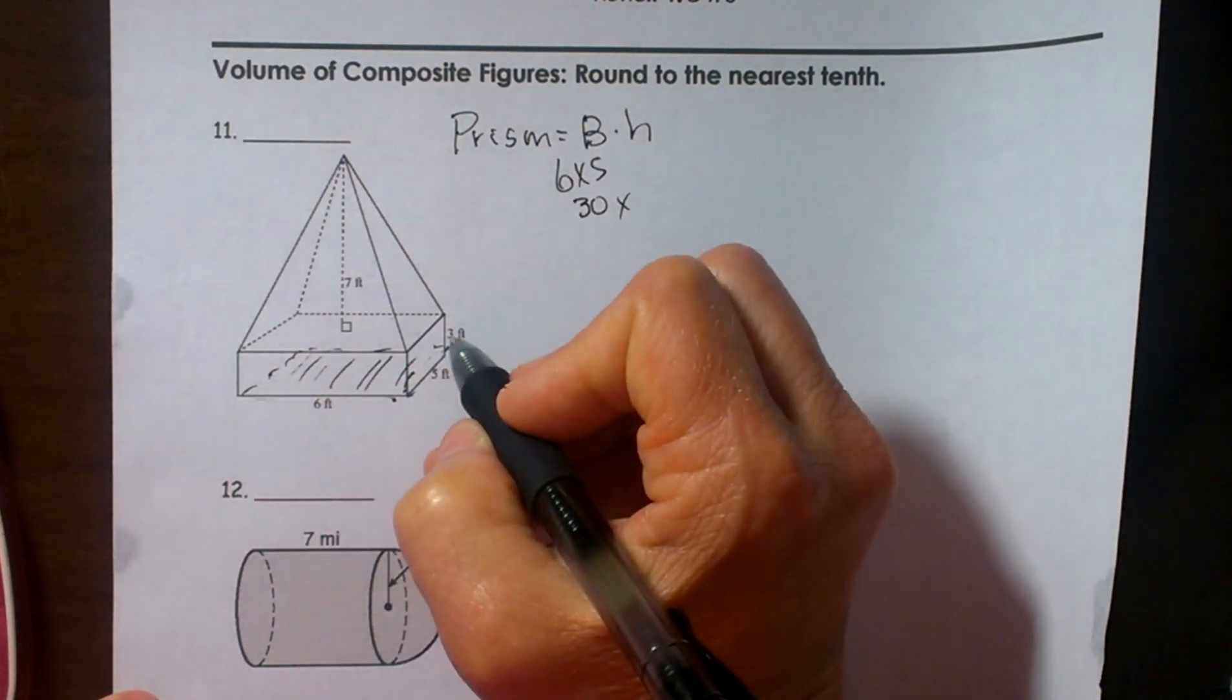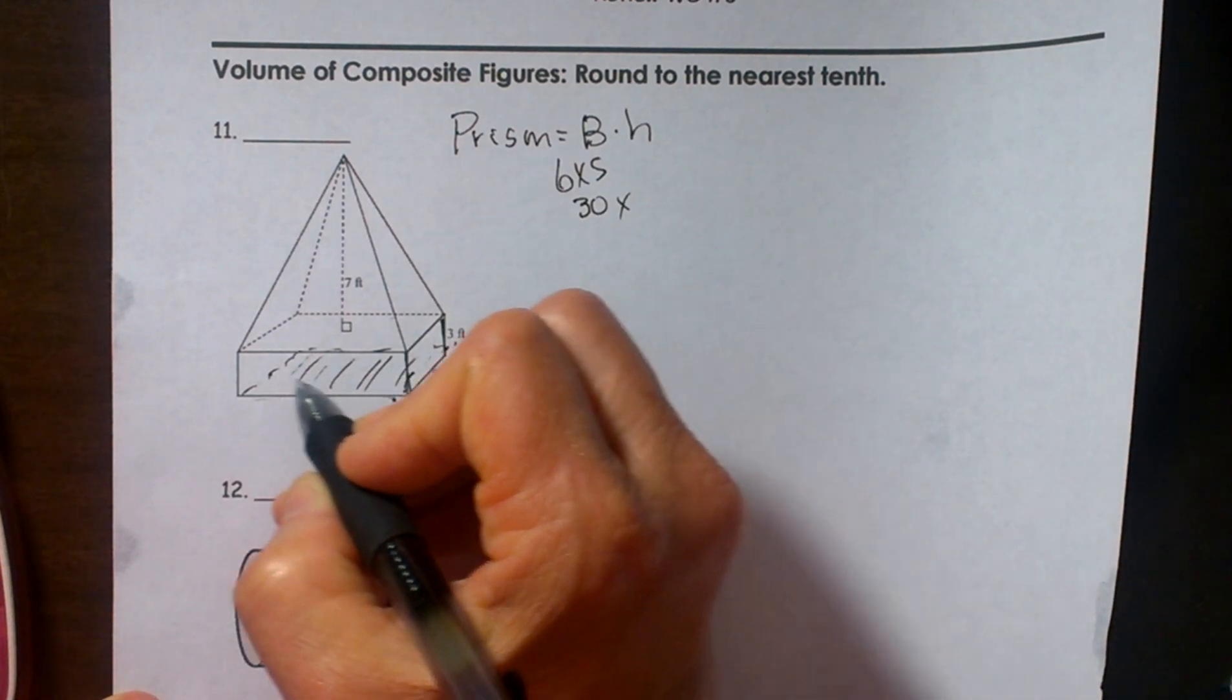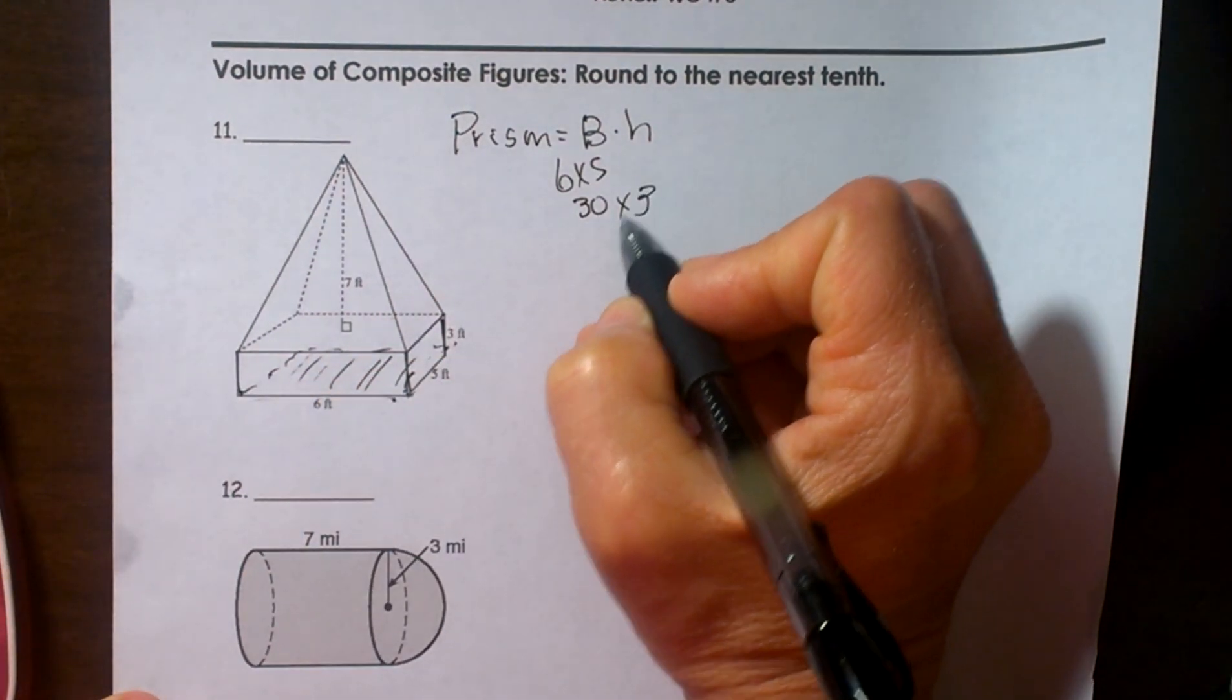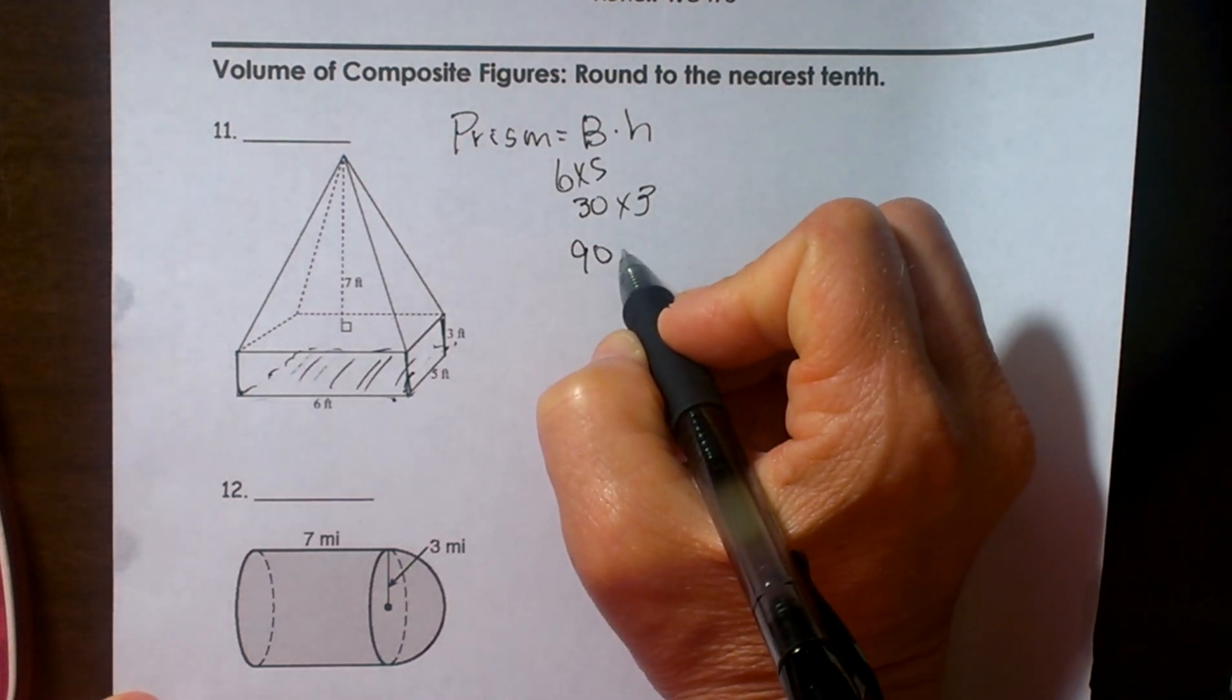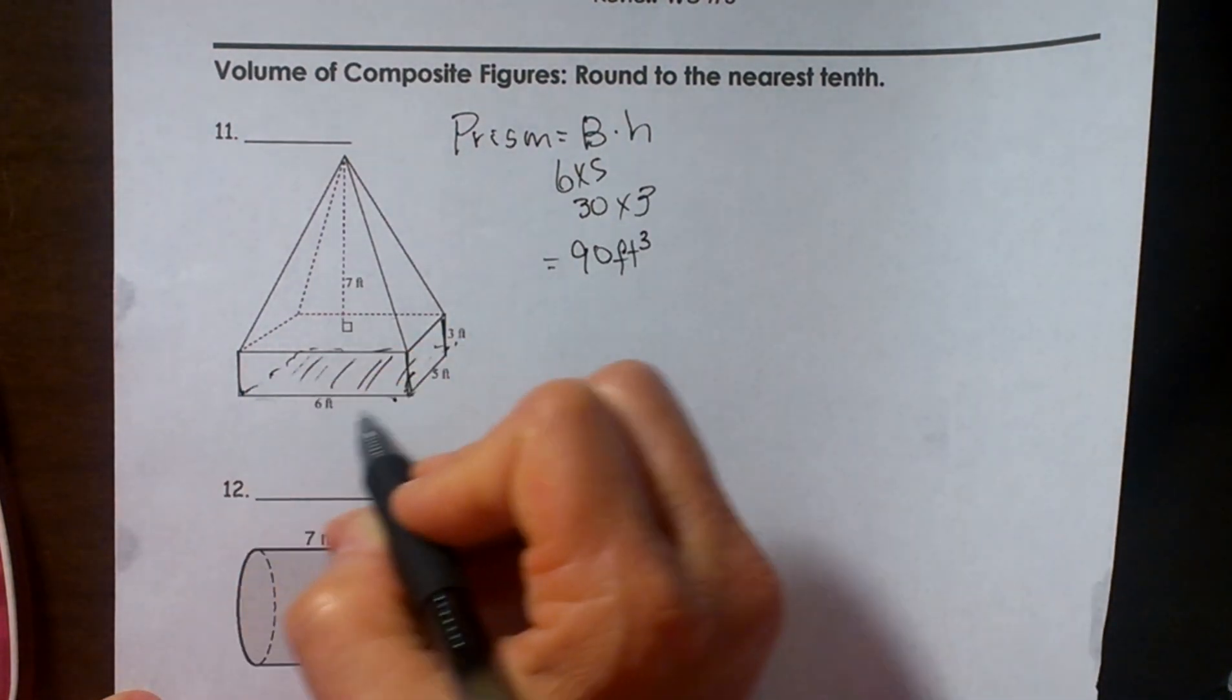So it is just going to be 6 times 5 or 30. And then we are going to multiply it by the height. The height over here is 3, it is 3 all the way around so multiply that by 3 so that gives us 90, 90 feet cubed would be the volume of our prism.